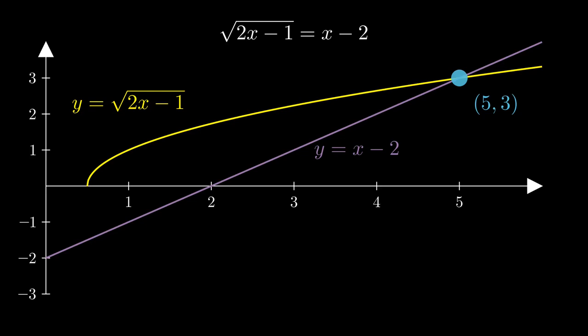Well then, where is our extraneous solution x equals 1? It's clear that these graphs don't intersect when x equals 1. The yellow curve is above the x-axis at that point, while the purple line is below it.